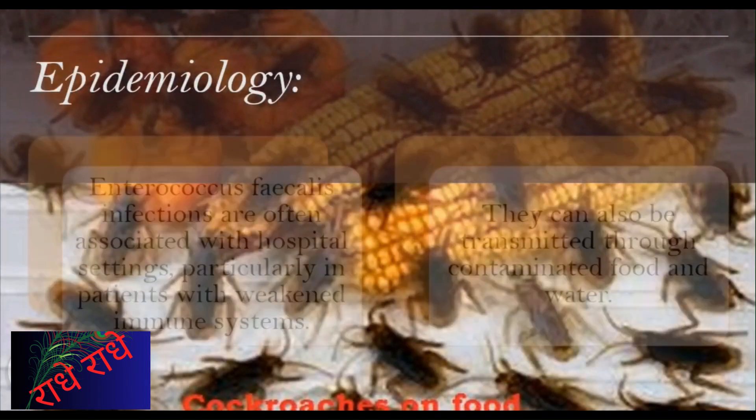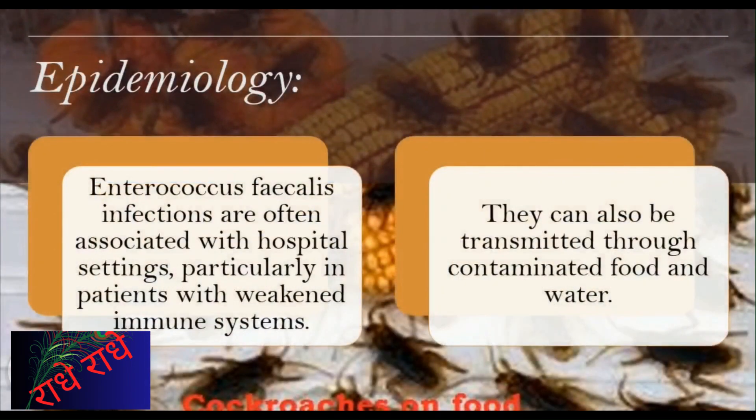Enterococcus faecalis is a species of bacteria commonly associated with hospital-acquired infections. Spread can occur via contaminated food and water sources or contact with people with weakened immune systems. Preventative measures include proper hand hygiene and avoiding contaminated food or water.